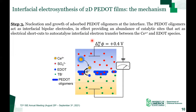In the third step, we have nucleation and growth of adsorbed PEDOT oligomers taking place at the liquid-liquid interface. The PEDOT oligomers here are like conducting islands that float at the interface, and they act as bipolar electrodes. In effect, they provide an abundance of catalytic sites that act as electrical shortcuts to catalyze interfacial electron transfer between the cerium aqueous oxidant and either species in the organic phase. This is an autocatalytic effect, and interfacial electron transfer therefore proceeds at a much lower overpotential than at a bare ITIES, with a several order of magnitude higher kinetic rate constant expected. Thus, these PEDOT oligomers will show rapid 2D growth parallel to the liquid-liquid interface.